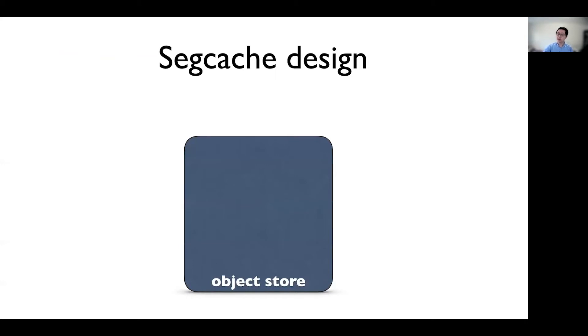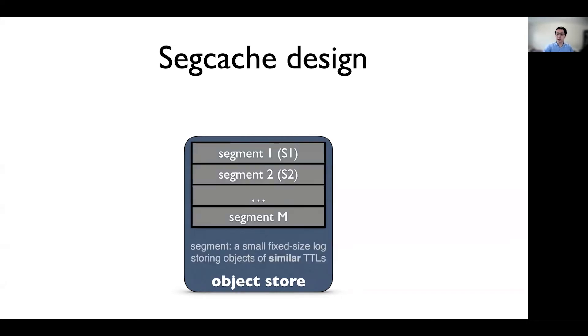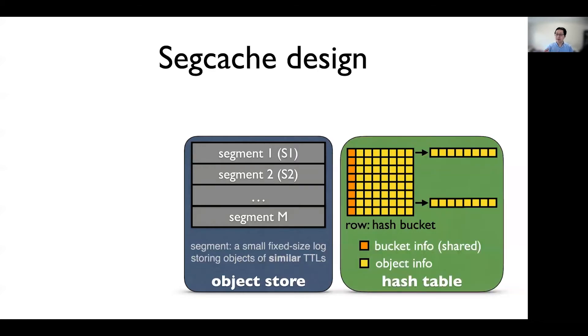Segcache has three components. The first is called object store, where basically it is a heap, and we divide the object store into segments. Each segment is a small, fixed-sized log storing objects of similar TTLs. The second is a hash table.